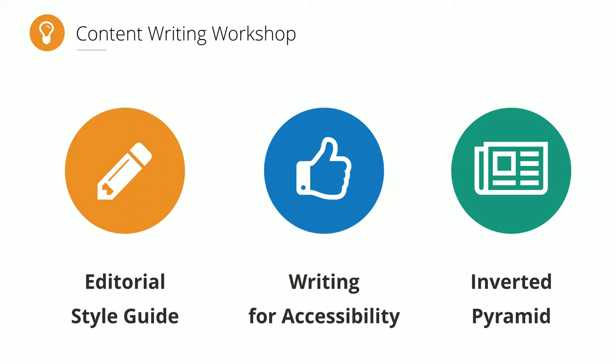The final component we cover is the inverted pyramid writing style — a journalism 101 concept. How we learn to write essays is the exact opposite: in an essay you put forward a thesis, provide evidence, and conclude at the end. With the inverted pyramid, you put your conclusion up top as the first thing on the page, then your most compelling supporting evidence, down to your least important support. Writing for the web in essay format doesn't work — it's not scannable and you get page bounces.